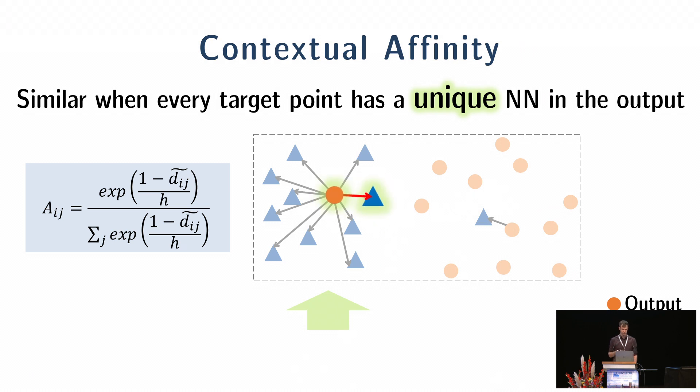On the other hand, this orange circle has many-to-one match since it is close to many blue triangles. Thus, it should have low affinity. And our normalization captured that as well.